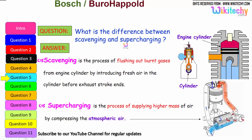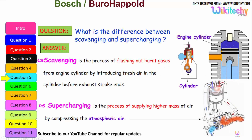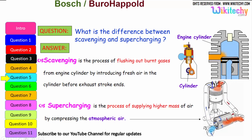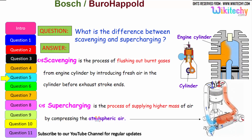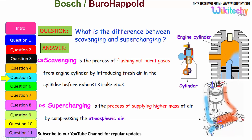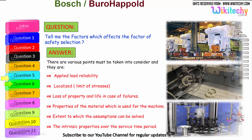What is the difference between scavenging and supercharging? Scavenging is the process of flushing out the burnt gases from the engine cylinder by introducing fresh air into the cylinder before the exhaust stroke ends. Supercharging is the process of supplying high-density masses of air by compressing it above atmospheric pressure — high-pressure air is injected into the cylinder to compress the atmospheric air.